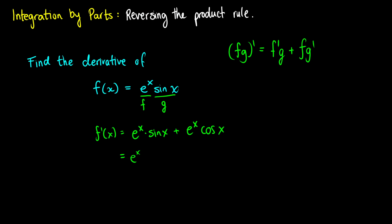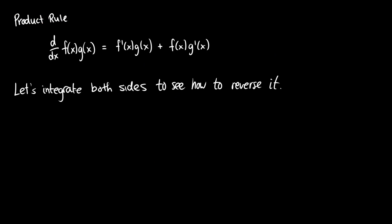Our solution is e^x · sin(x) + e^x · cos(x). We can make it look cleaner by factoring out e^x, giving us e^x · (sin(x) + cos(x)). Now let's take a look at the product rule in reverse. Here the product rule is written out fully: the derivative with respect to x of f(x)·g(x) is f′(x)·g(x) + f(x)·g′(x).